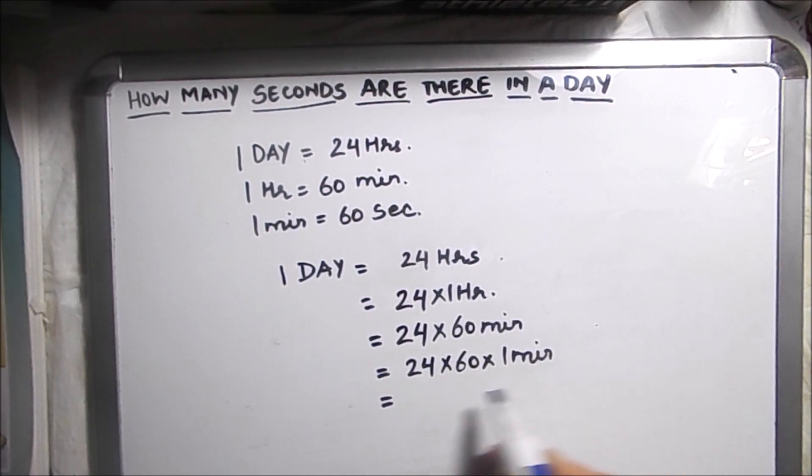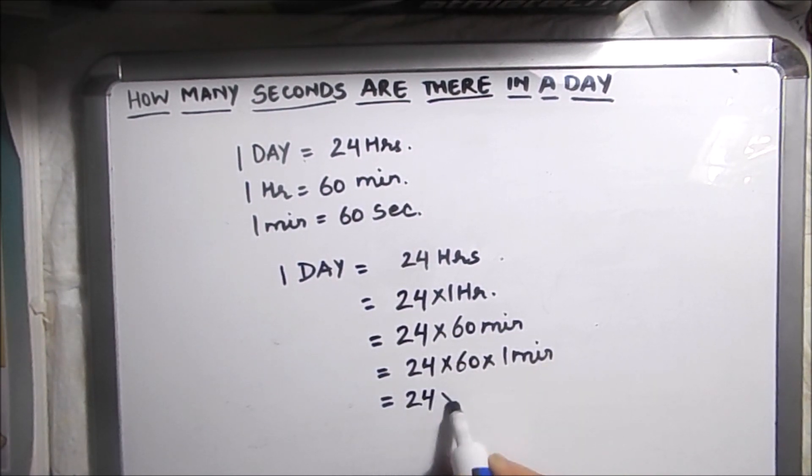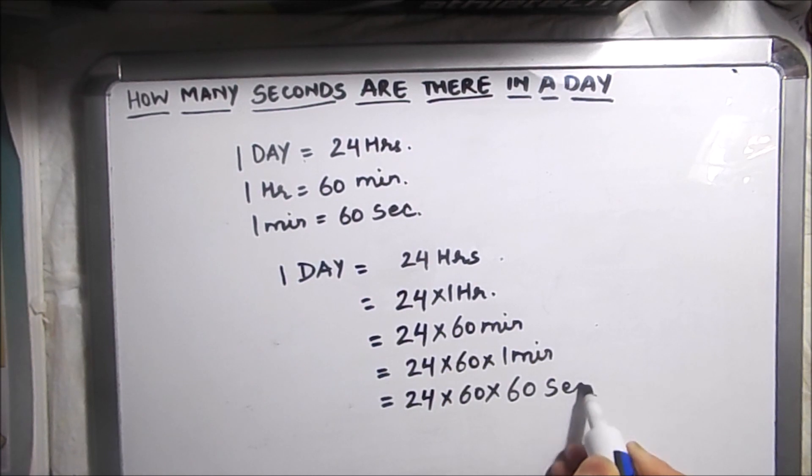So we will write 1 minute as 60 seconds. Now we will calculate this number.